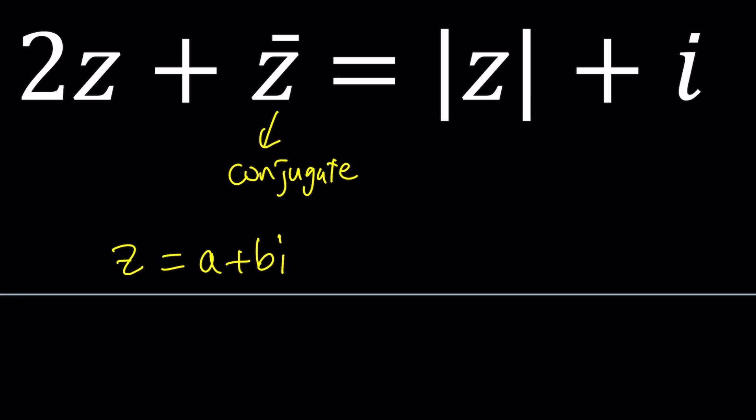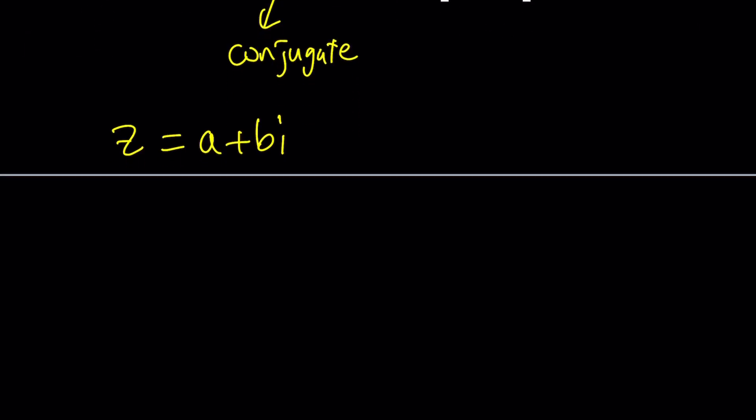Obviously you can also use X plus YI but A plus BI I like better. It's also the name of the channel. Based on this we can evaluate Z bar and absolute value of Z. If Z equals A plus BI then Z bar can be written as A minus BI. You just change the imaginary part and you get the complex conjugate. The complex conjugate has interesting properties. When you multiply a complex number by its complex conjugate the product is always a real number. When you add them the sum is always a real number and that's the unique number that satisfies both properties.